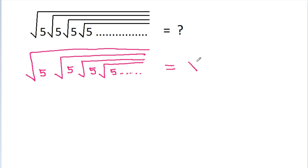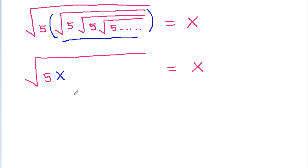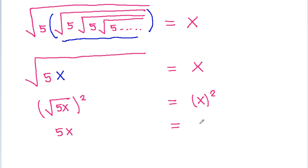Suppose it is equal to x. So x equals a square root of 5 times a square root of 5 times a square root of 5 and so on, which is equal to x itself. If we square both sides, then the square root of 5x squared equals x squared, which gives us 5x equals x squared. From here we can say that x is not equal to 0.